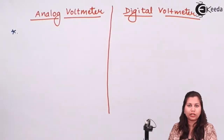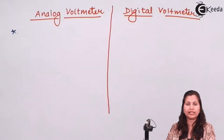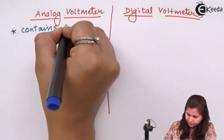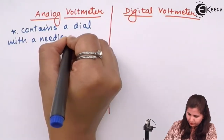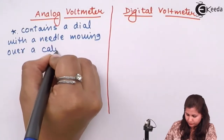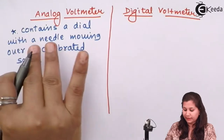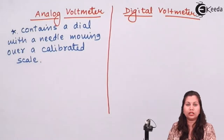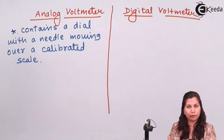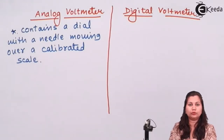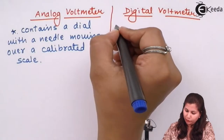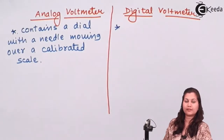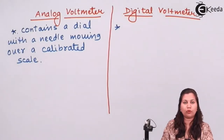The analog voltmeter contains a dial with a needle, and this pointer deflects over a calibrated scale. The needle moves over the scale according to the value of the input voltage, deflecting in proportion to it. The digital voltmeter, on the other hand, provides us the direct discrete numerical value of the voltage.